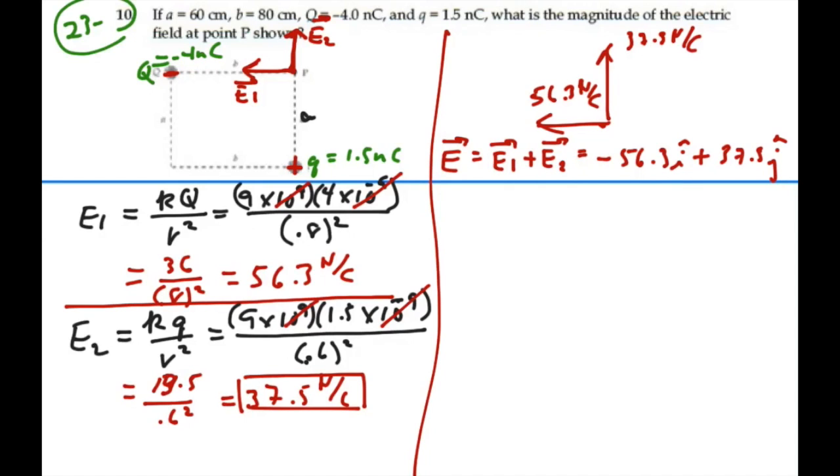If we want the magnitude of this field, we would square the components, add them together, take the square root. So negative 56.3 squared plus 37.5 squared. Negative is not going to matter when we square it. It's going to be squared out. And what does that give us? 67.6 newtons per coulombs.